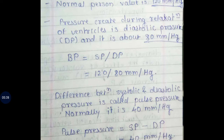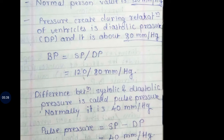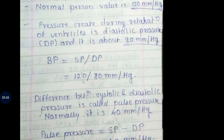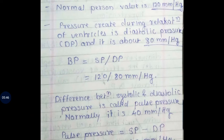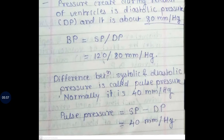The difference between systolic and diastolic pressure is called pulse pressure. Systolic pressure minus diastolic pressure equals 40 mmHg. So pulse pressure in the arteries is 40 mmHg.